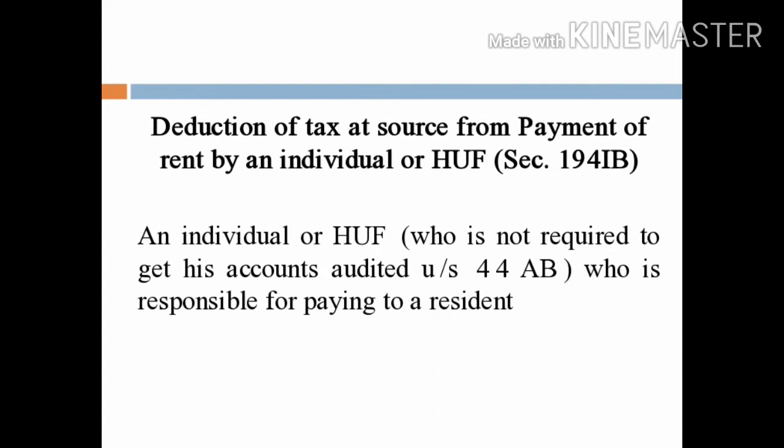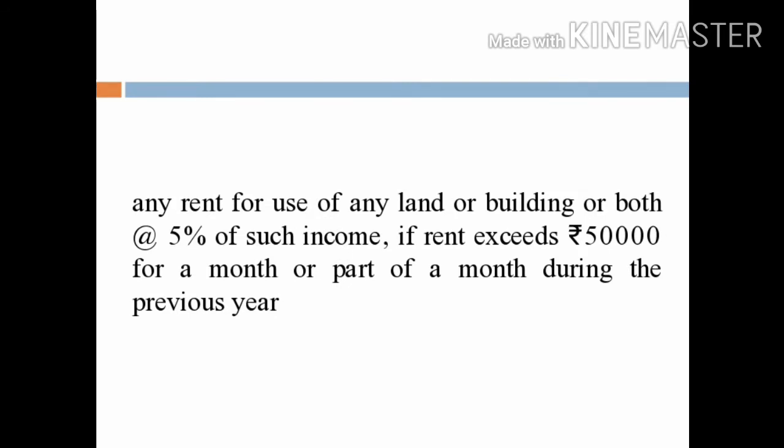Deduction of tax at source from payment of rent by an individual or HUF — section 194IB. An individual or HUF who is not required to get his accounts audited under section 44AB, and who is responsible for paying to a resident any rent for use of any land or building or both, shall deduct tax at the rate of 5% of such income if rent exceeds Rs. 50,000 for a month or part of a month during the previous year.